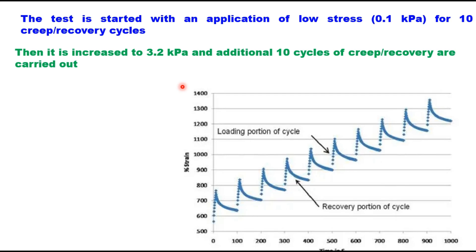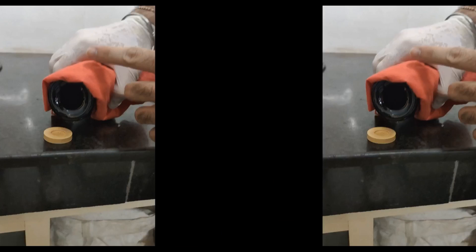The material response in the MSCR test is significantly different from the G* / sinδ test, where an oscillating load is applied at very low strain. As noted earlier, this low strain does not truly represent the ability of a polymer modified binder to resist rutting. This test can be done on the same DSR used for G* / sinδ determination, and similar to G* / sinδ, it is performed on an RTFO short-term aged sample. The binder is first short-term aged using the rolling thin film oven test, then used to prepare the specimen for the MSCR test, with the same specimen size as used for G* / sinδ.